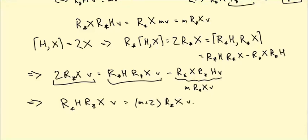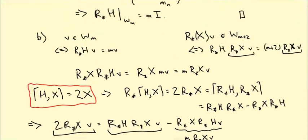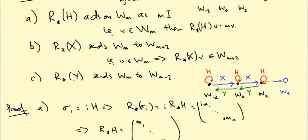So I told you this equation was going to be important, this [H, X] equals 2X. This is the first instance where it becomes important. It's going to come up again and again. Okay, so it's going to be an exercise for you to check part C of the lemma, which is the corresponding statement for r_star Y.